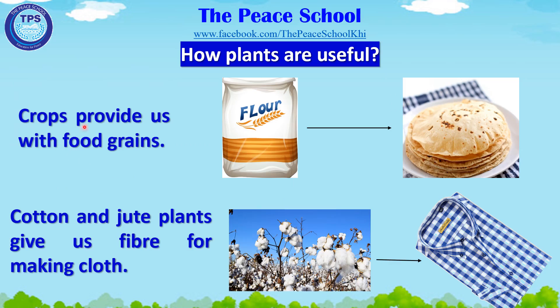Crops provide us with good grains. Cotton and jute plants give us fiber for making cloth.